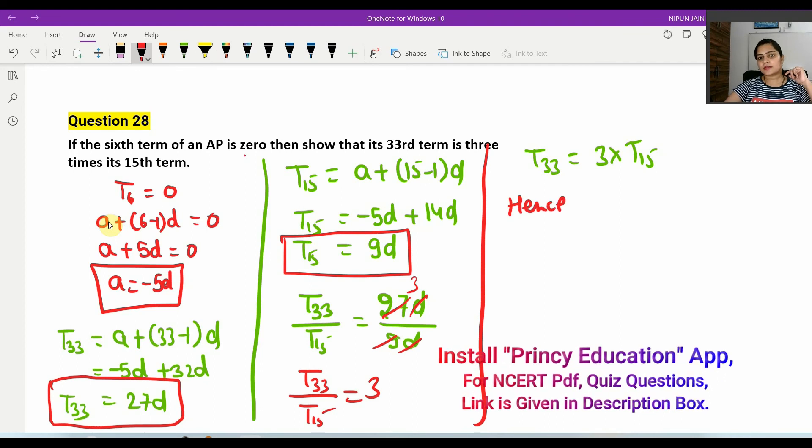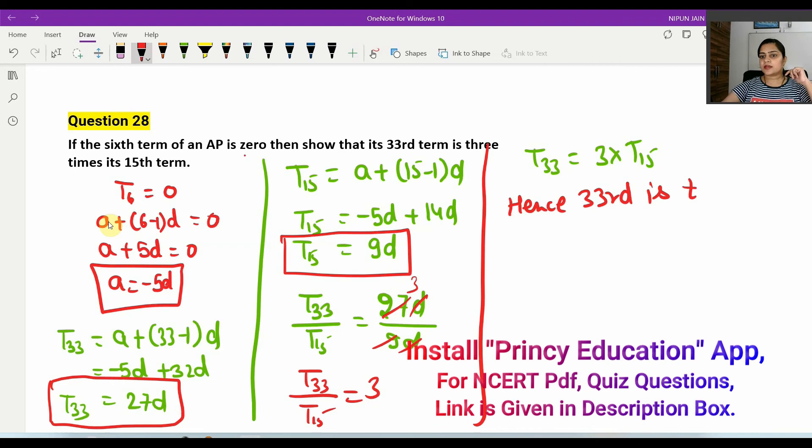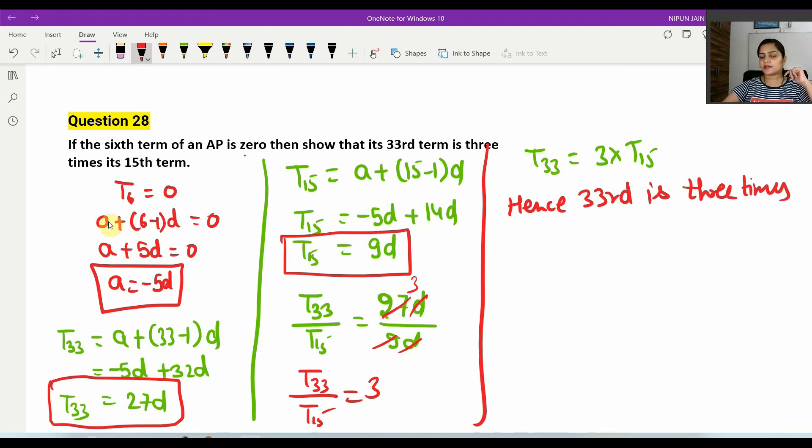Hence, T33 is 3 times the 15th term. Right?